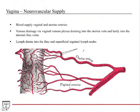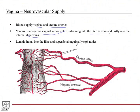The blood supply to the vagina comes from both the vaginal and uterine arteries — a dual blood supply. The more proximal part is supplied by the uterine artery and the more distal part by the vaginal artery, both branches of the internal iliac artery. Venous drainage is via the vaginal venous plexus, which drains into the uterine vein and then the internal iliac vein. Lymph drainage from the vagina is to the iliac and superficial inguinal lymph nodes — important because tumors or infections will spread there.